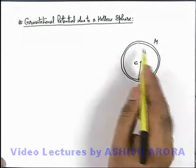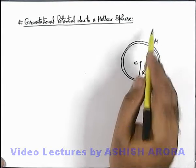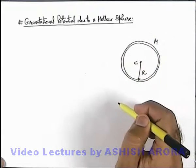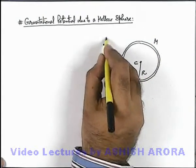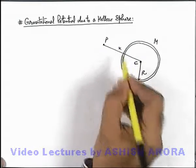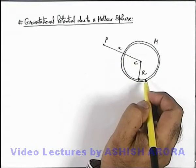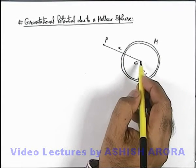Due to this mass, because of its symmetrical distribution in the surrounding, gravitational field exists in radially inward direction. So if we talk about an outer point P which is located at a distance x from center, we can simply state this shell behaves like a point mass located at its center.